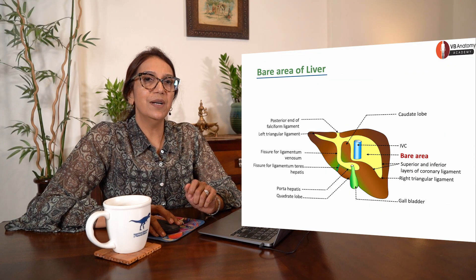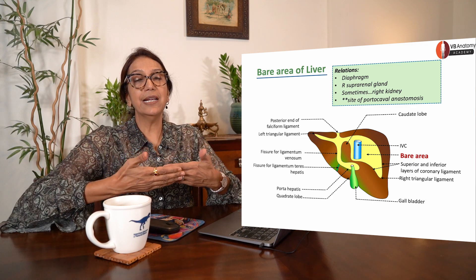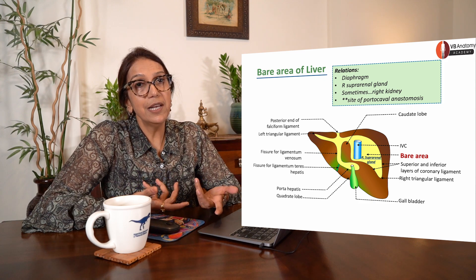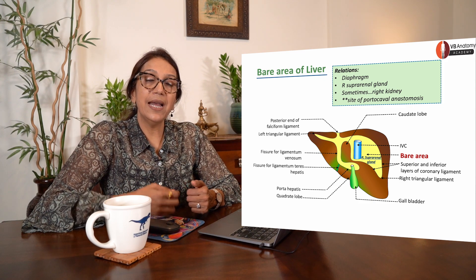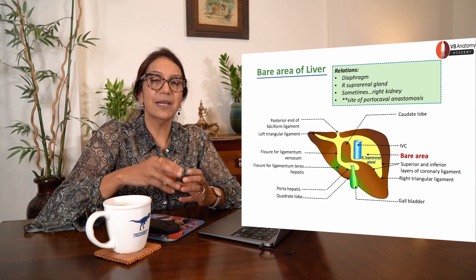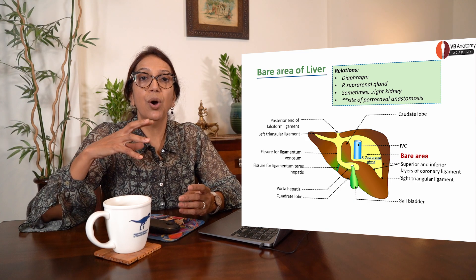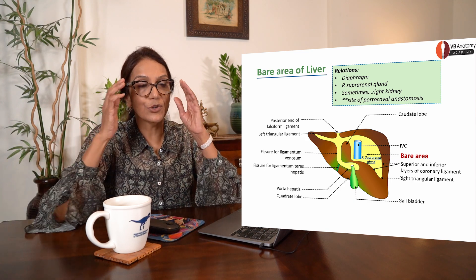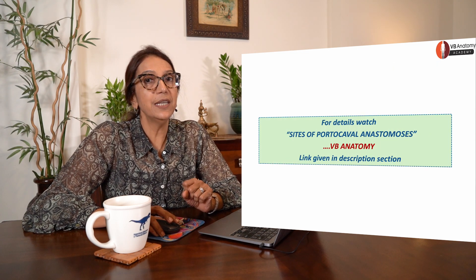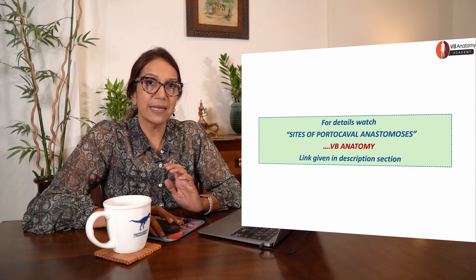This area of the liver is related to a lot of structures. It's bare — there's no peritoneum. So it's directly related to your diaphragm, directly related to the right suprarenal gland, maybe related to the right kidney, and is definitely a site of porto-caval anastomosis — branches of portal vein anastomosing with veins draining into the inferior vena cava or the systemic circulation. A separate lecture on porto-caval anastomosis has been made and uploaded in case you want to know more.